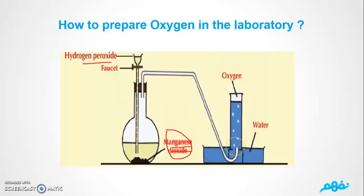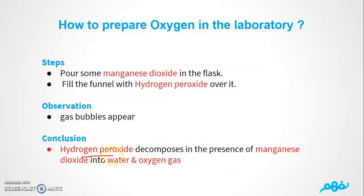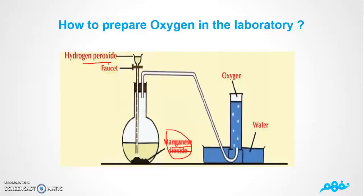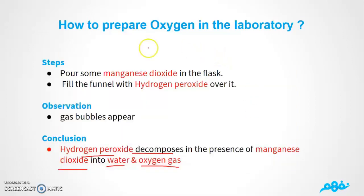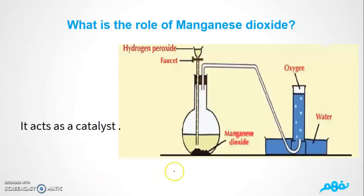After that, we're going to find that gas bubbles appear. The conclusion is: hydrogen peroxide decomposes in the presence of magnesium dioxide into water and oxygen gas. The bubbles you see are the oxygen gas. As you can see, hydrogen peroxide decomposes into water and oxygen because of the presence of magnesium dioxide.